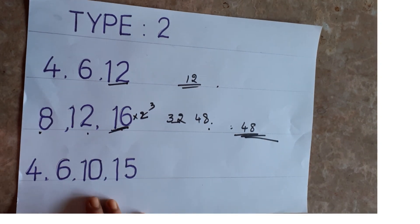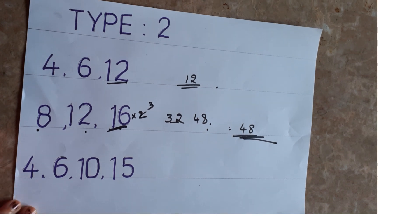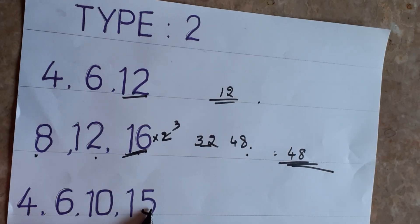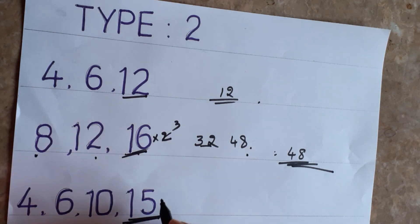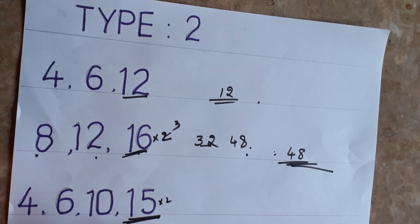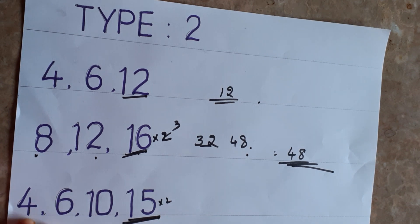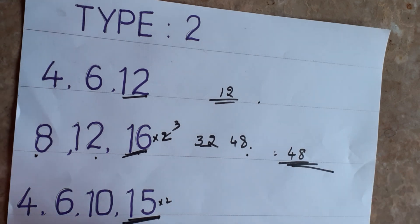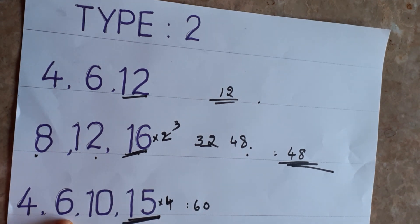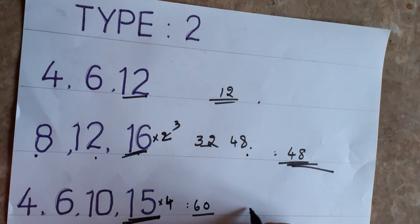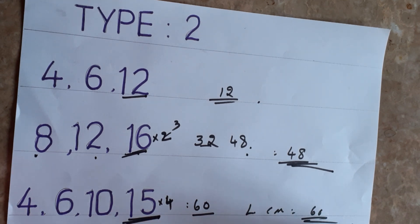Another Type 2 example: 4, 6, 10, and 15. The highest is 15. Does 4 divide into 15? No. Does 6 divide into 15? No. So multiply: 15 × 2 = 30 — 4 does not divide 30. Try 15 × 3 = 45 — 4 does not divide 45. Try 15 × 4 = 60 — 4 divides 60, 6 divides 60, and 10 divides 60. So LCM is 60.